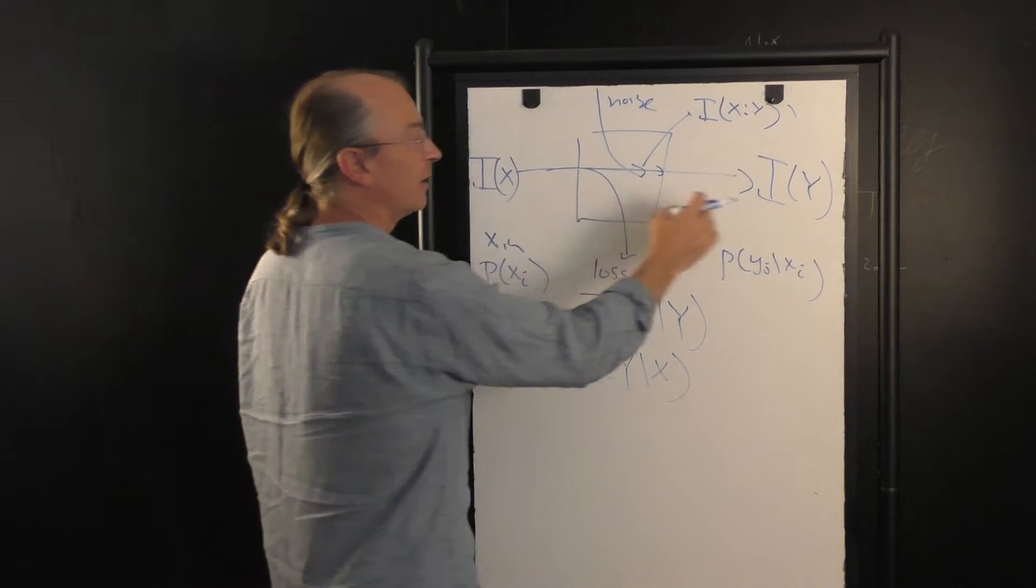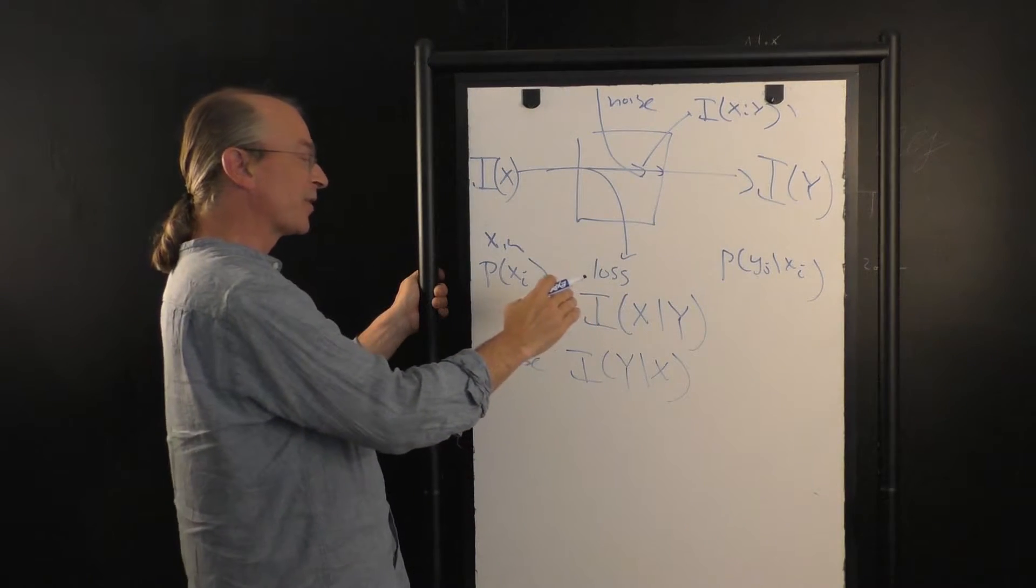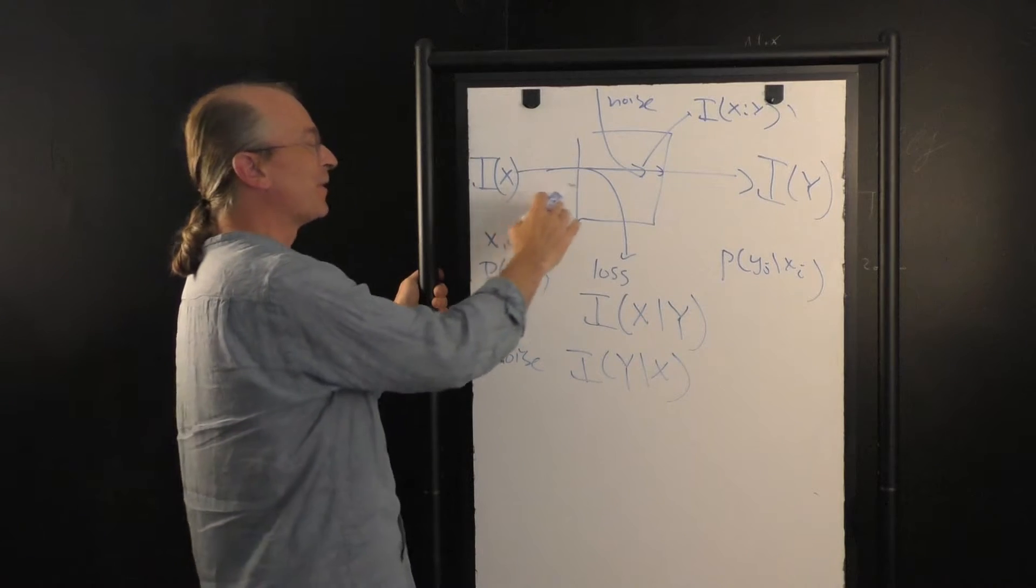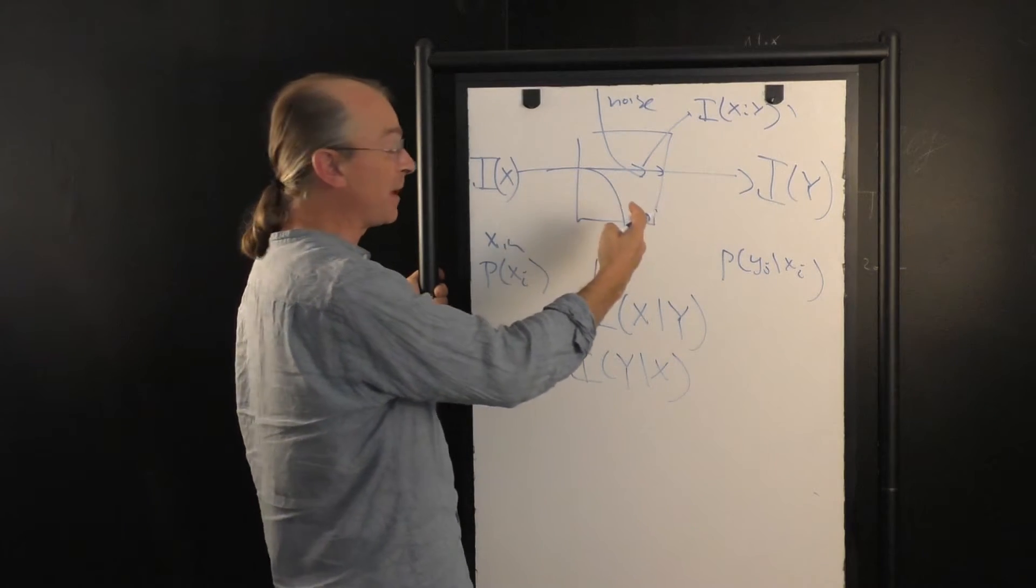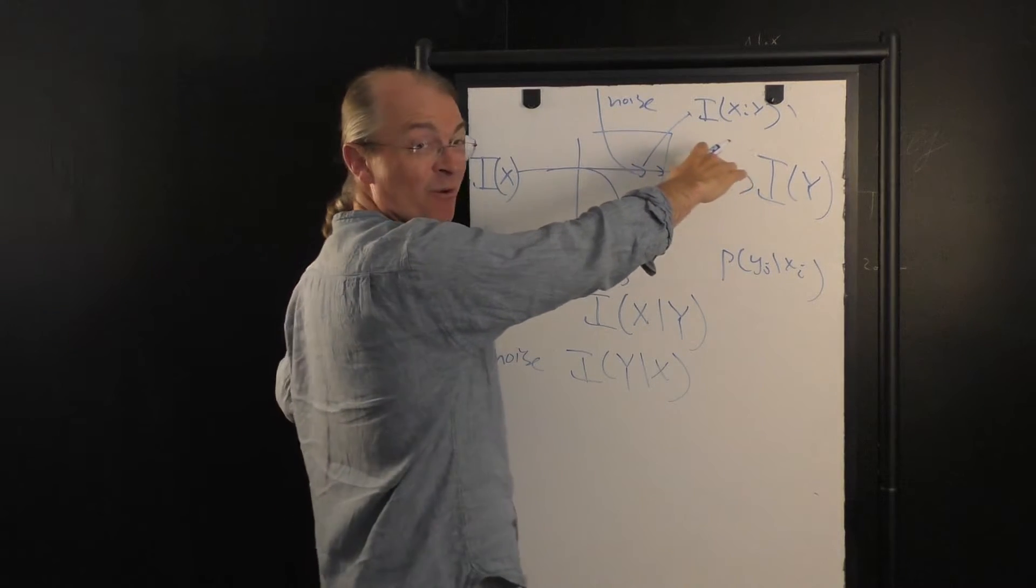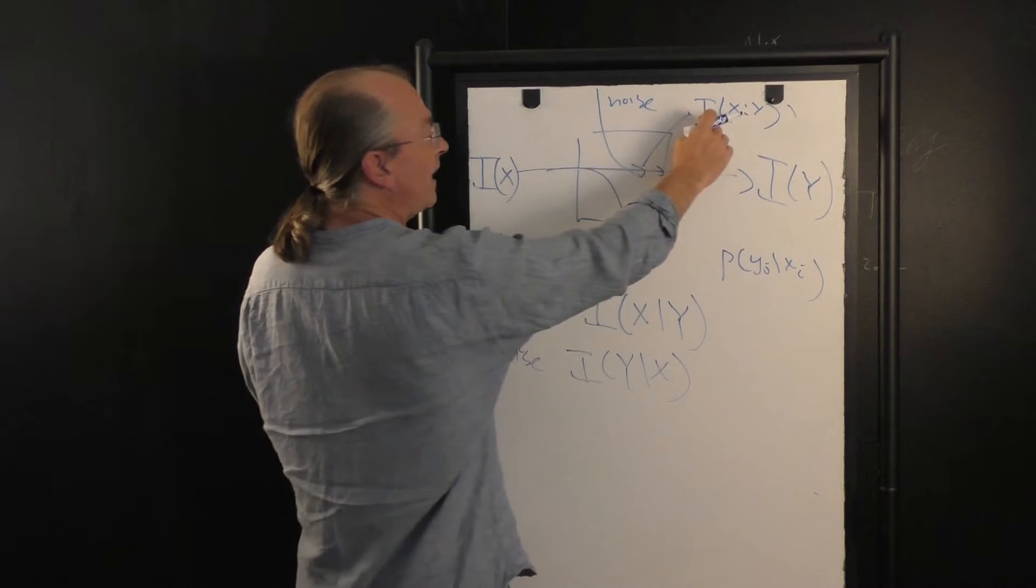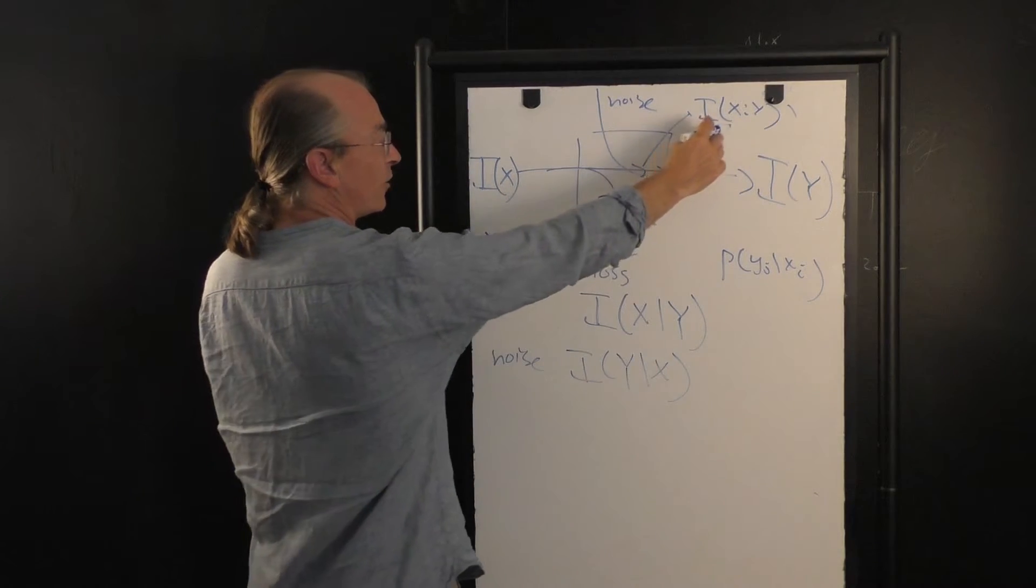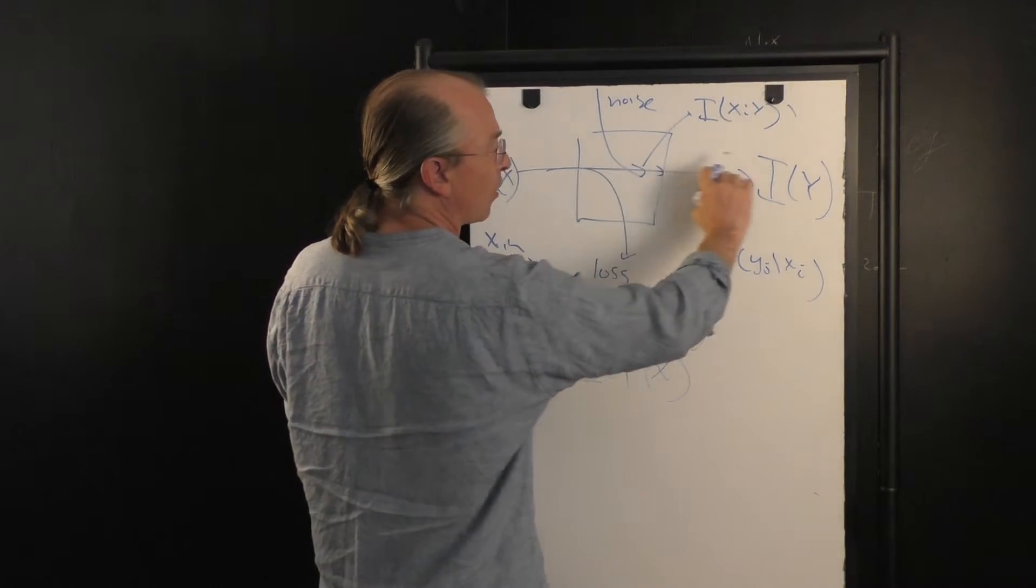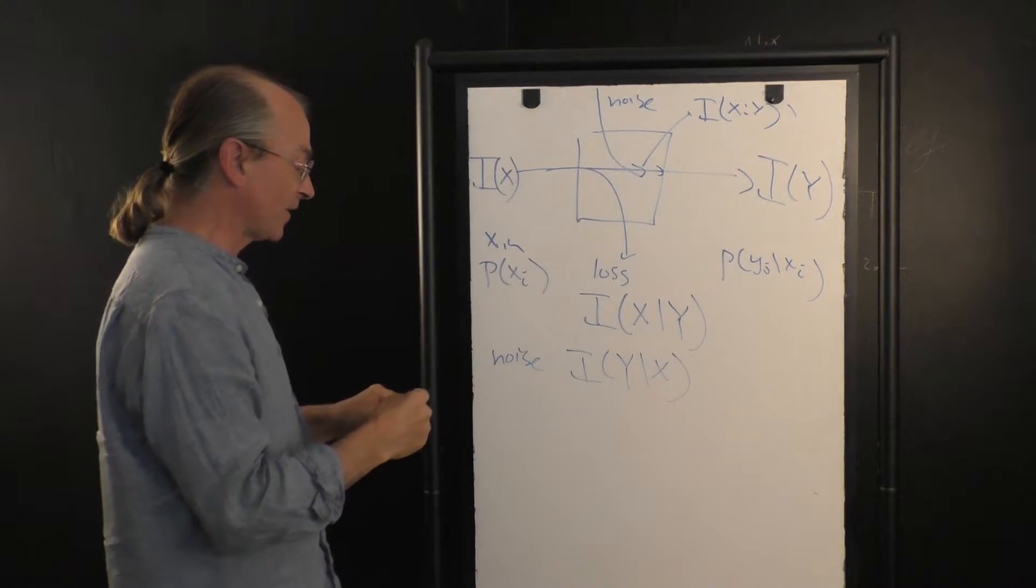So we have a nice picture in terms of the whole set of processes that are going on in information. We have the information going in, the information going out. We have the loss which is information that goes in that doesn't come out. We have noise which is information that came from nowhere that didn't go in. Of course it actually comes from physical processes. And finally we have the mutual information which is the information that actually goes through the channel and that represents the channel capacity.